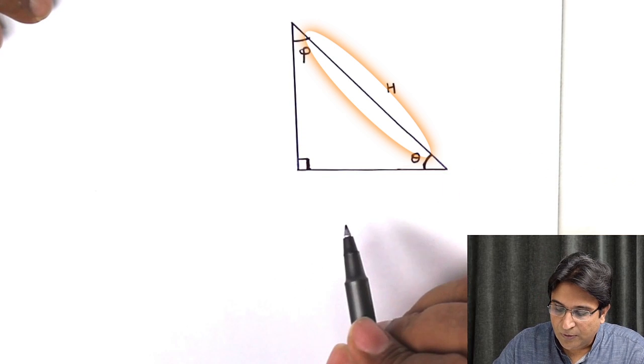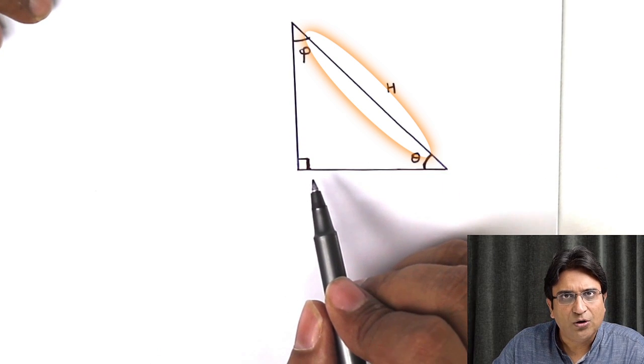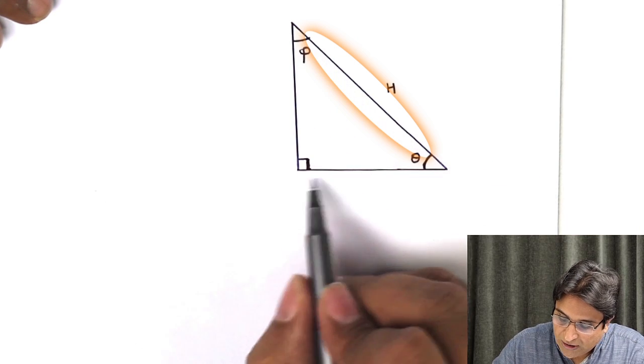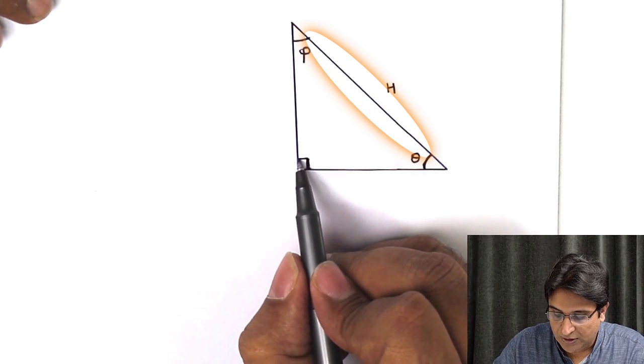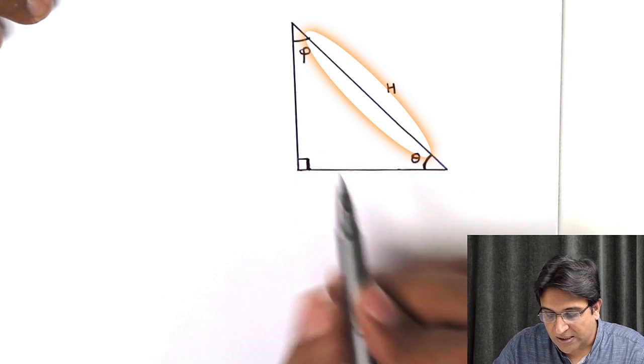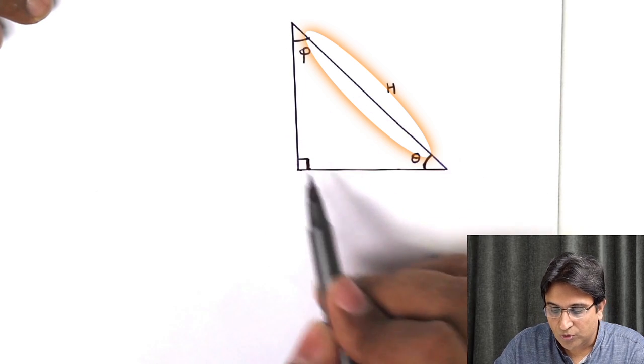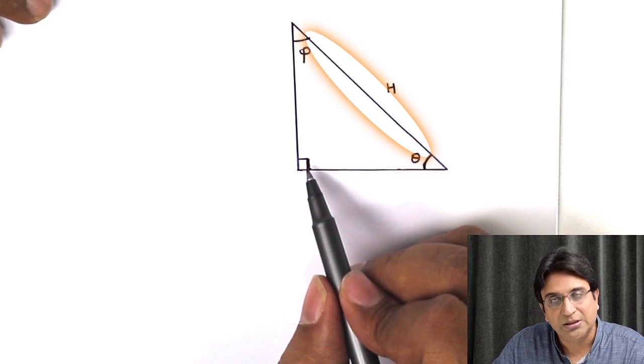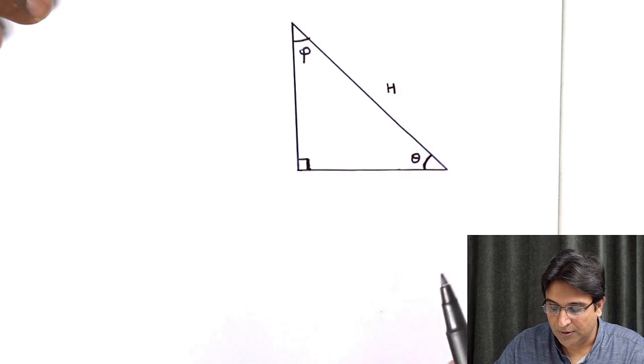Now, the easiest way to find the side opposite any angle is just ignore the two sides which are making up the angle. So, this is the angle. And which are the two sides which are the arms of the angle? This side and this side. If you ignore those two, what is left? The third side. That is known as the side opposite this angle. So, that is hypotenuse.